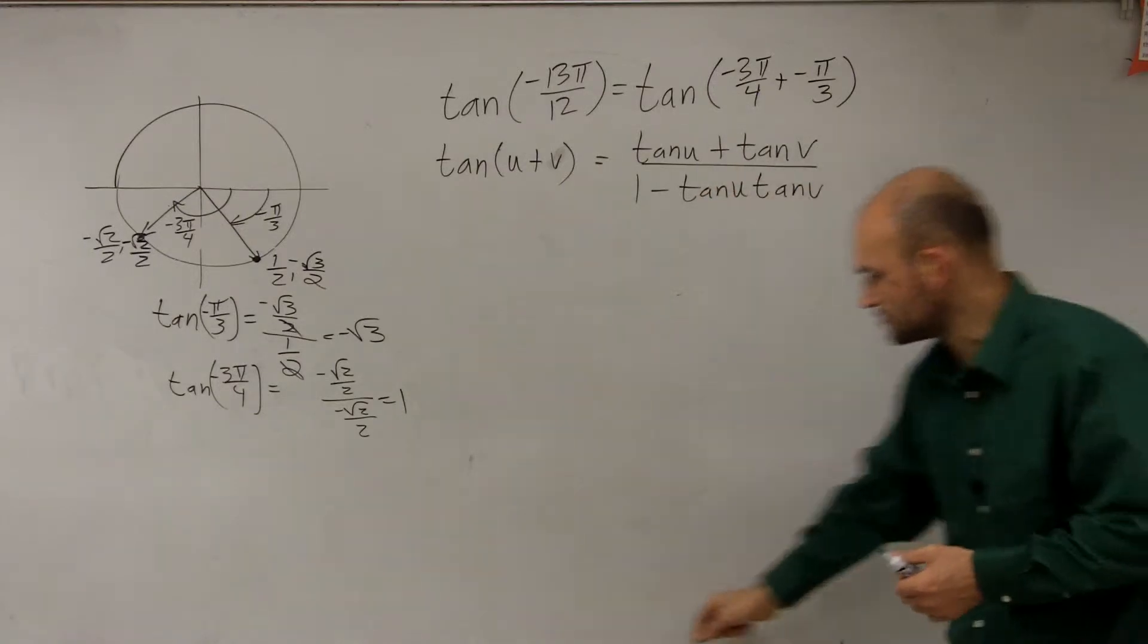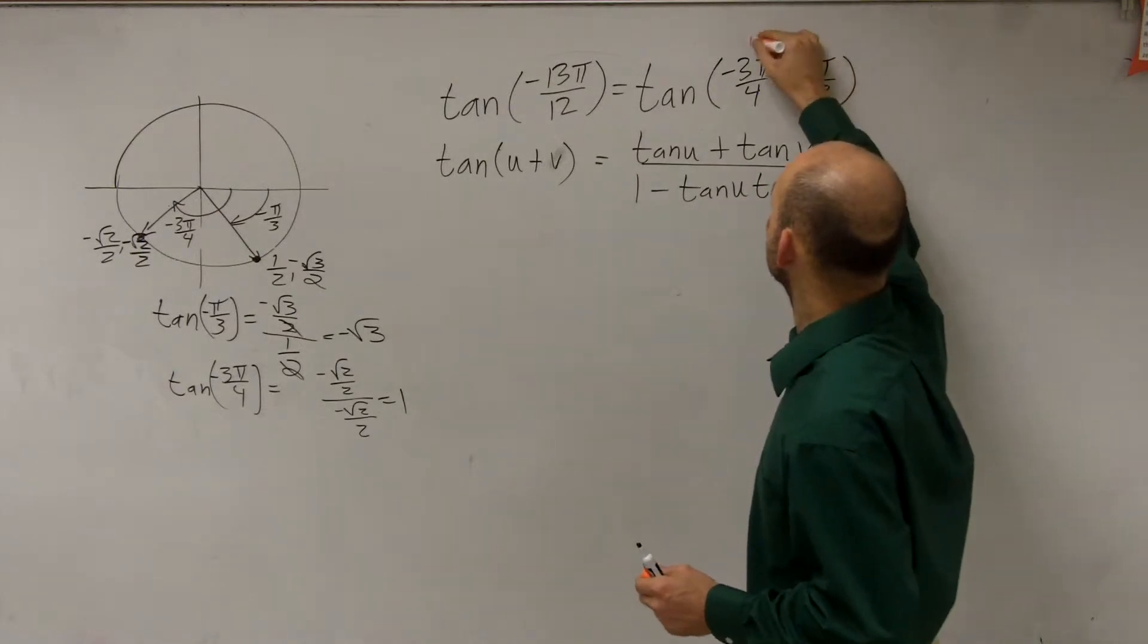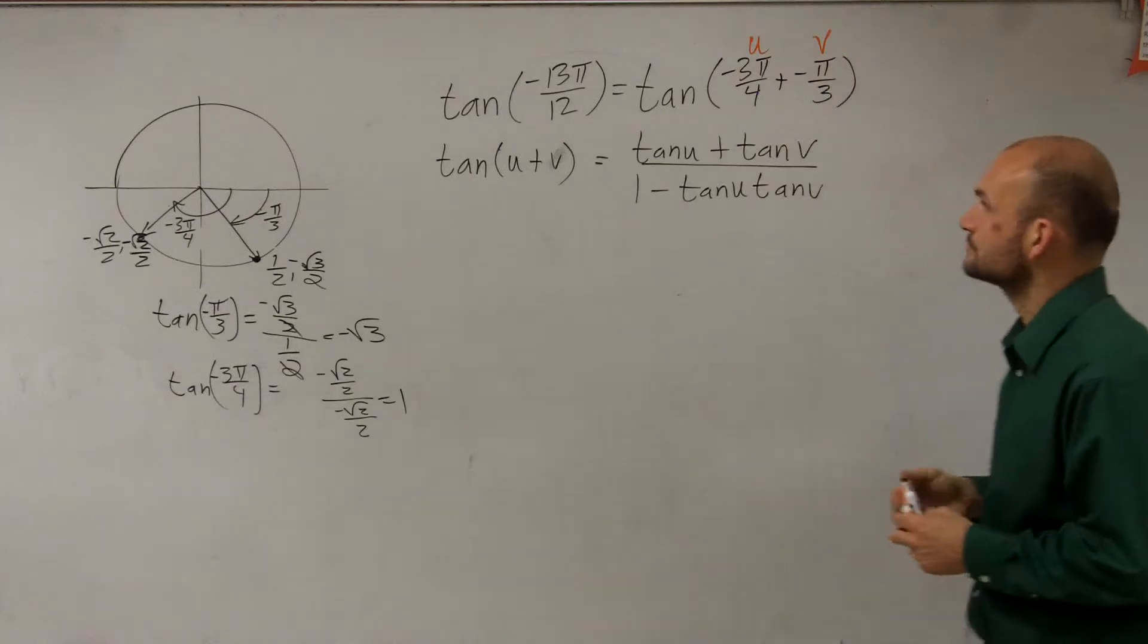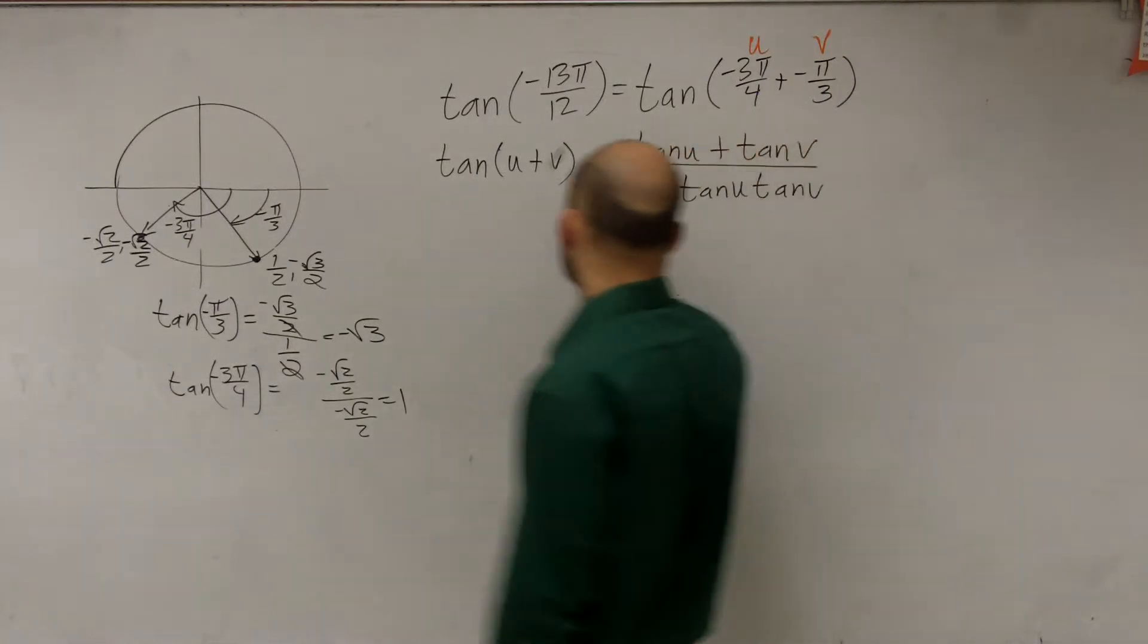I'll label this point as my u, and then this one's my v. Now we're just going to simply plug them into our formula.